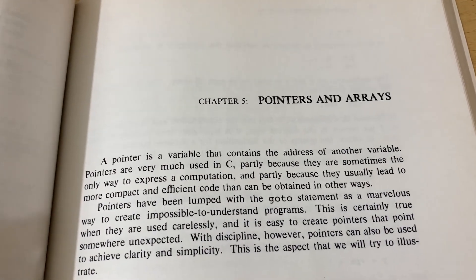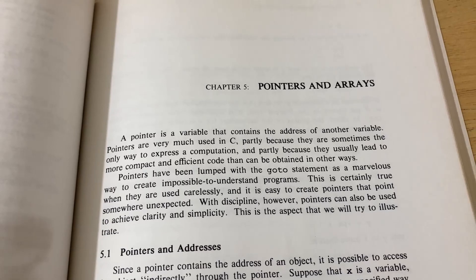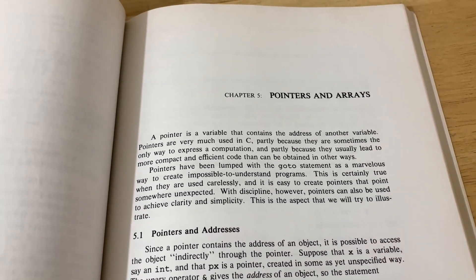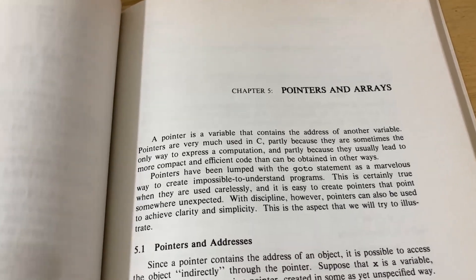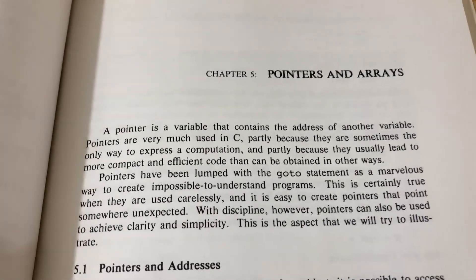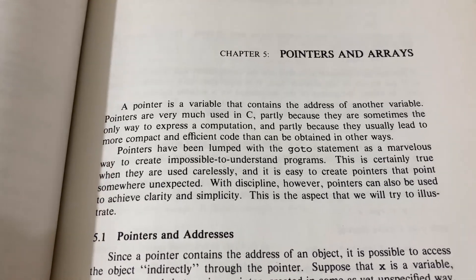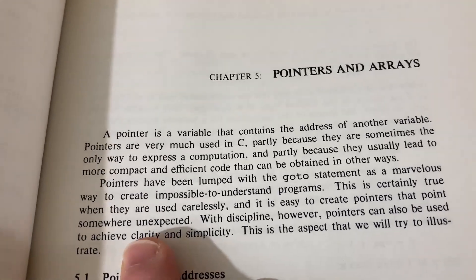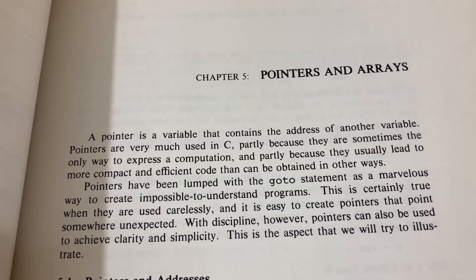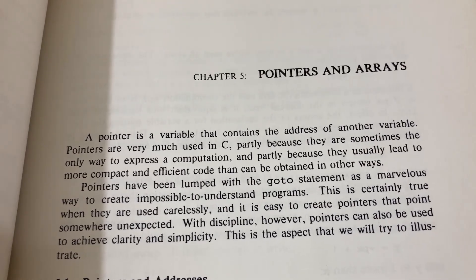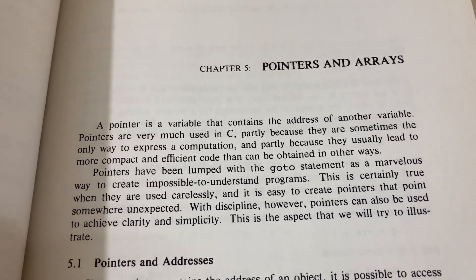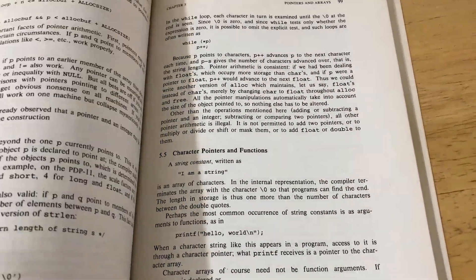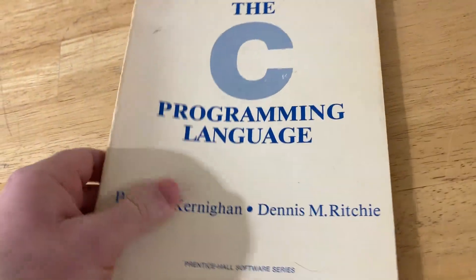Chapter five is on pointers and arrays, and this is probably the hardest thing for people to learn when they're first learning C. You can get your programs running, learn about functions, and get pretty far — but once you get to pointers, a lot of people get stuck. I remember not understanding pointers for a very, very long time. A pointer is a variable that contains the address of another variable — that's all it is. Pointers are very much used in C, partly because they are sometimes the only way to express a computation, and partly because they usually lead to more compact and efficient code. So there are sticking points when learning anything, just like mathematics. But in any case, I think it's a beautiful language, and I think this is a legendary book.